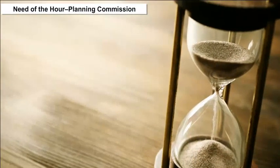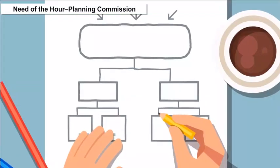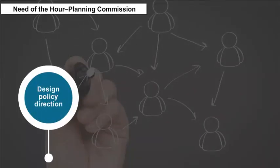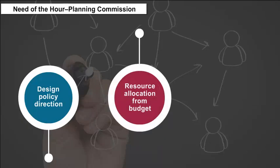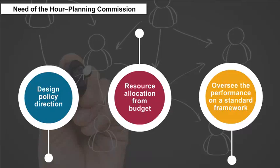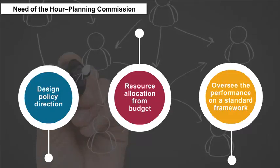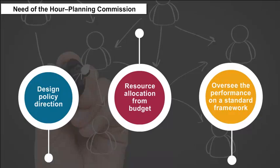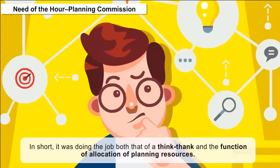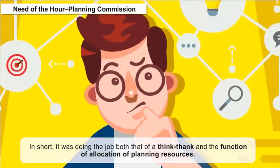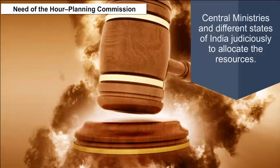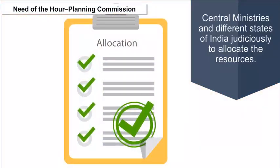The Planning Commission was set up on 15th March 1950. It was formulated to design policy direction, influence resource allocation from the budget, and oversee performance on a standard framework for comparative assessment of all states. In short, it functioned both as a think tank and as an allocator of planning resources among central ministries and different states of India.